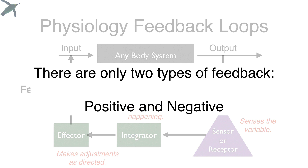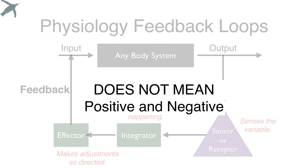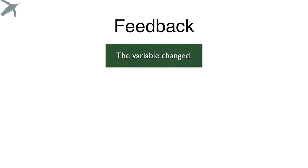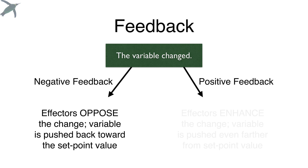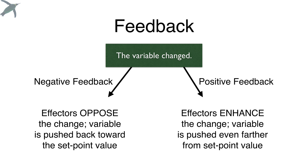There are only two different types of feedback: positive and negative. Students get confused about this because we tend to associate positive and negative with good and bad — that is not the case here. In negative feedback loops, the effectors oppose the change, so the variable gets pushed back toward the set point value. In positive feedback loops, it's the reverse: effectors enhance the change, so the variable is pushed even farther from the set point.